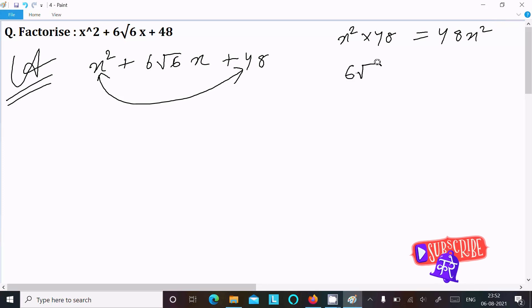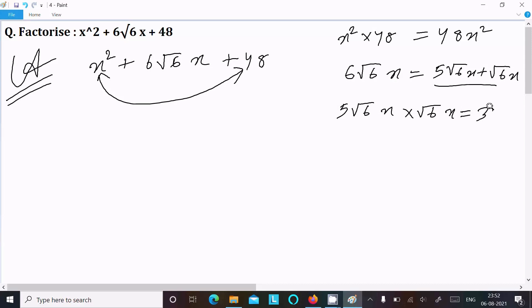The middle term here is 6√6x. We can write 6√6x as 5√6x + √6x. If you multiply 5√6x into √6x, this counts 30x². Now, 30x² and 48x² are not the same, so we cannot take the combination of 5√6x + √6x. If they're not equal to 48x², then we need to try another combination.